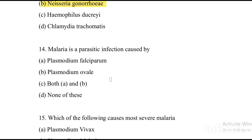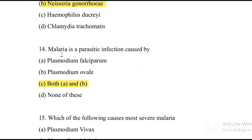Next question: Malaria is a parasitic infection caused by — Option A: Plasmodium falciparum. Option B: Plasmodium ovale. Option C: both A and B. Option D: none. The answer is Option C, both A and B — Plasmodium falciparum and Plasmodium ovale are malaria-causing parasites.